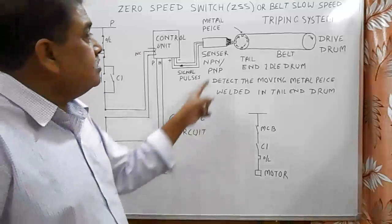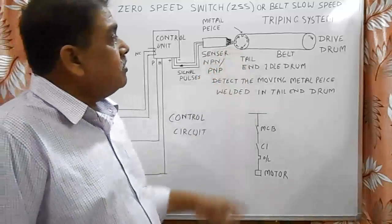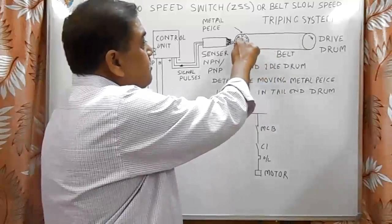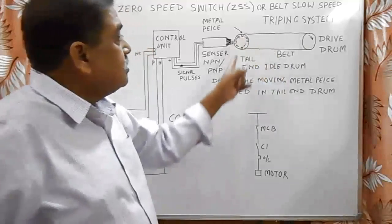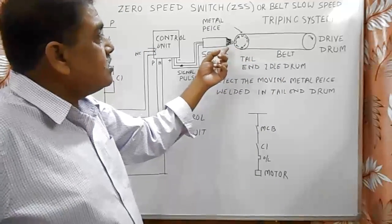Here we use a sensor with the tail end drum. When the belt moves with a certain speed, these metal pieces are welded to the tail end drum that rotates in front of the sensor, so the sensor generates continuous pulses at a particular frequency.